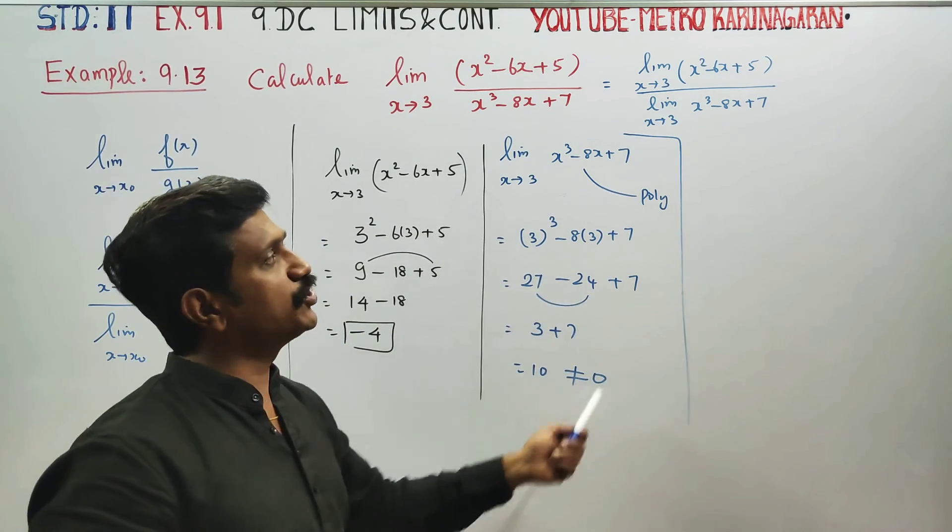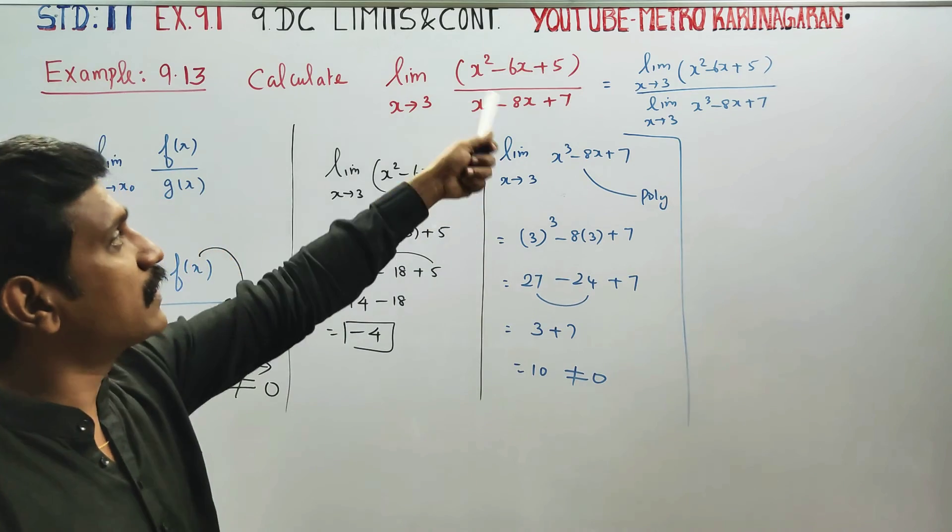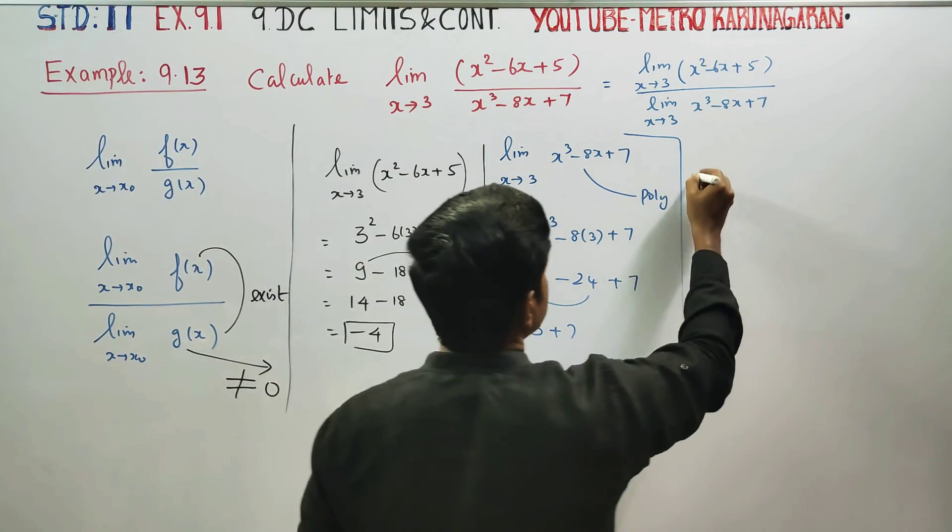Both limits exist. Denominator is not equal to zero. So we find the numerator limit separately and the denominator limit separately.